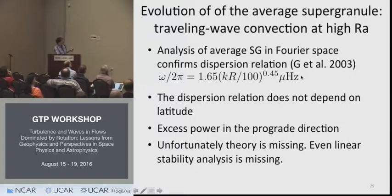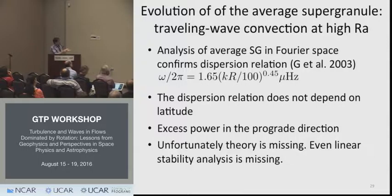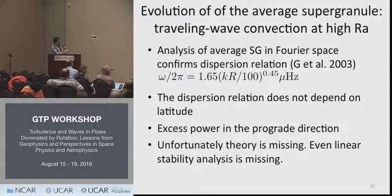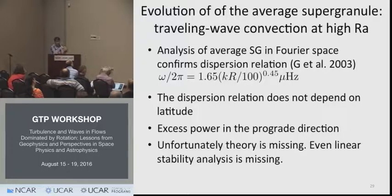If you take the evolution of a supergranule and do a Fourier analysis, a dispersion relation pops out. The frequency is of the order of 1.65 μHz at a horizontal wave number of 100, with a particular relationship ω ∝ k^(1/2). This dispersion relation does not depend on latitude, and there is excess power in the prograde direction. Unfortunately, there is no theory for that — even linear stability analysis is completely missing — and I would really like some people to help us figure this out.